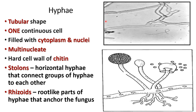Hyphae are tubular-shaped, one continuous cell filled with cytoplasm and nuclei — they are multi-nucleated. The cell wall is hard and made up of chitin. The stolon has horizontal hyphae that connect groups of hyphae to each other. The root-like structure you can see here is called the rhizoid.